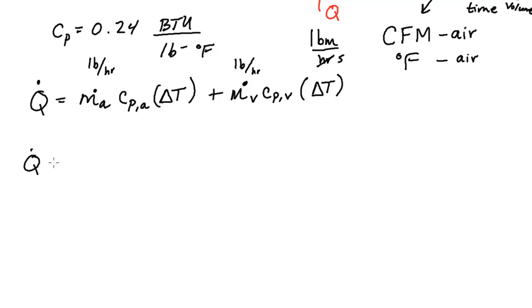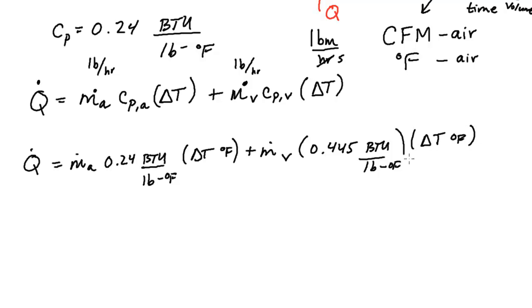So let's do some filling in. We have Q is equal to the mass flow rate of air. We now know that this term is 0.24 BTUs per pound degree F multiplied by a delta T. That's also in degrees F, plus the mass flow rate of vapor, times 0.445 BTU. So again, water vapor. Water has a much higher specific heat than just air by itself, which again is nitrogen, oxygen, and items like this, also multiplied by our delta T in degrees F.